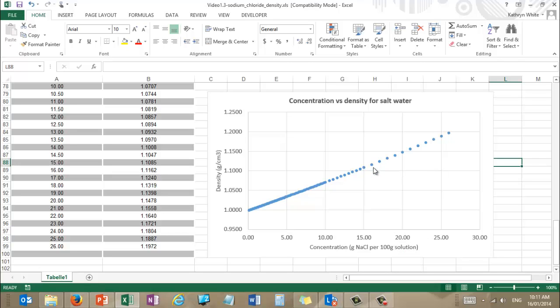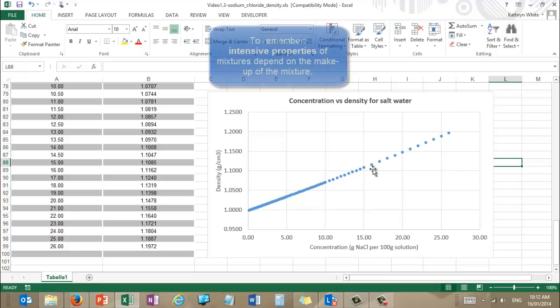This makes sense because the atoms that sodium chloride is made up from, sodium and chlorine, each weigh more than the atoms that water is made up of, oxygen and hydrogen. So sodium and chlorine atoms weigh more and are denser than water molecules. So when you add them to water, if you increase the proportion of salt in the water, then you're making the whole solution denser. So the point here is that the concentration of our mixture determines the density.